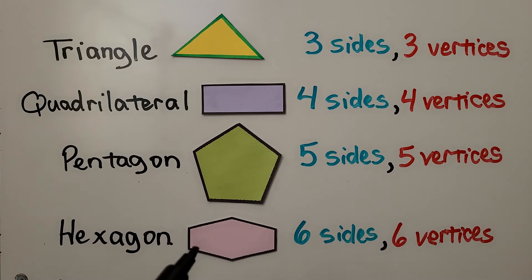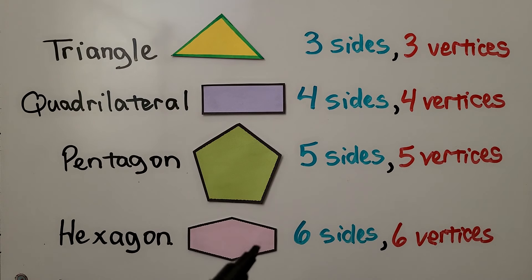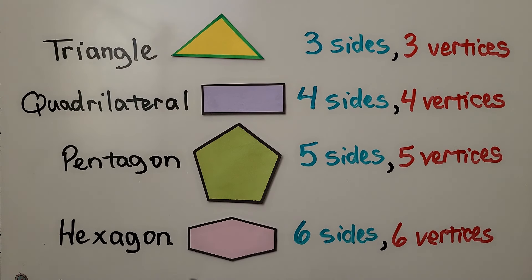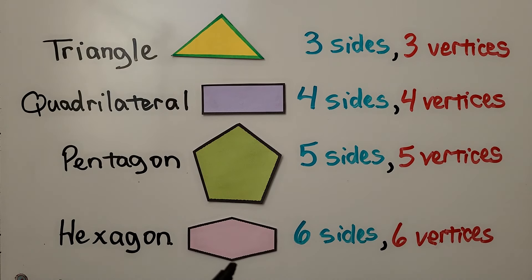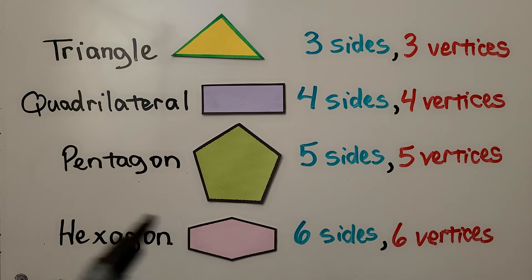This is a hexagon. It's got six sides — one, two, three, four, five, six. It has six vertices — one, two, three, four, five, six.